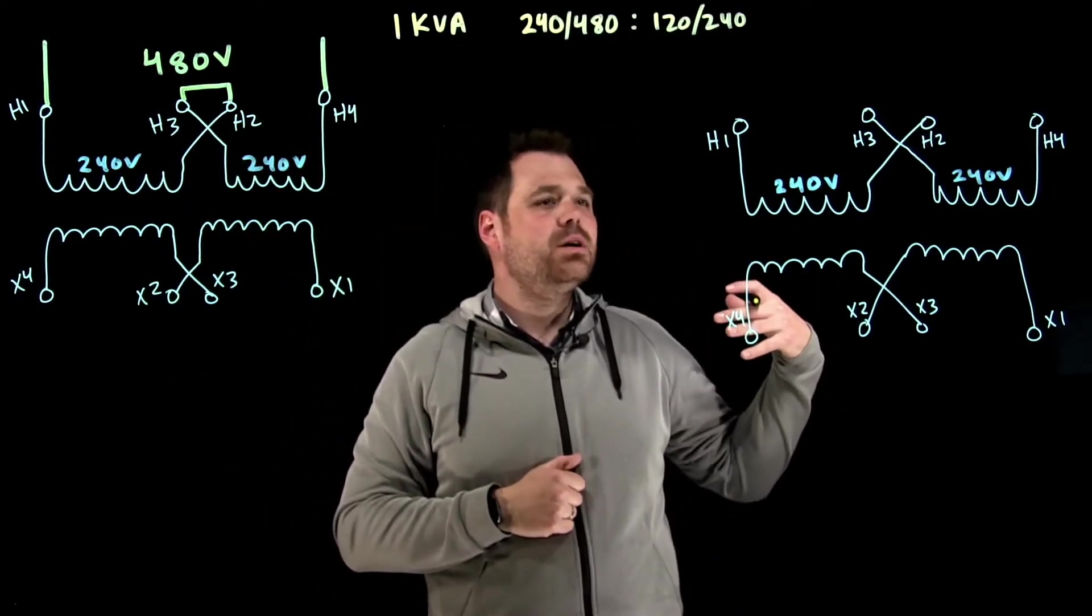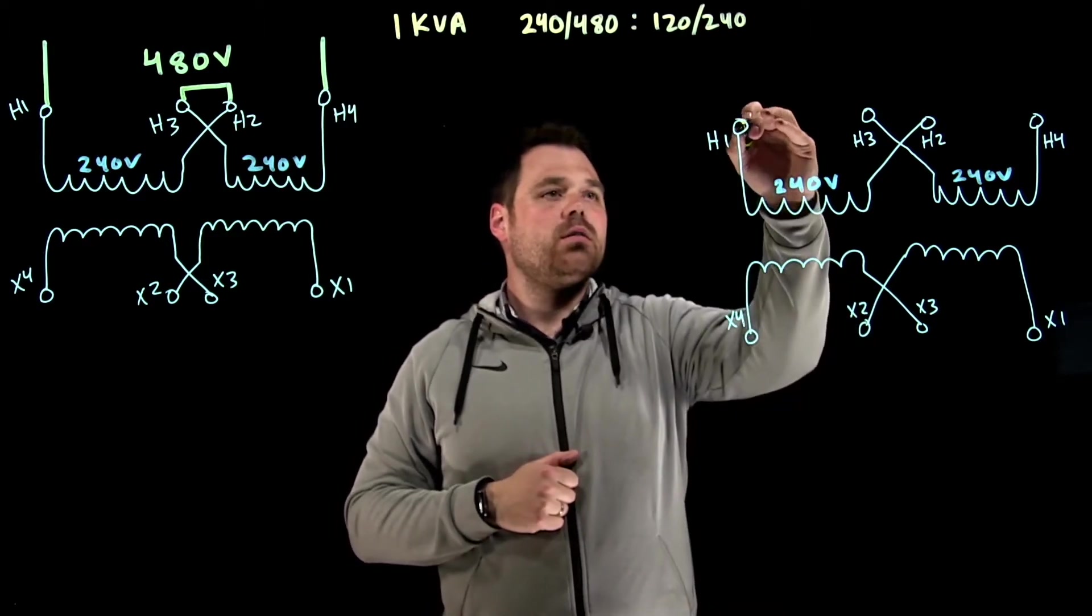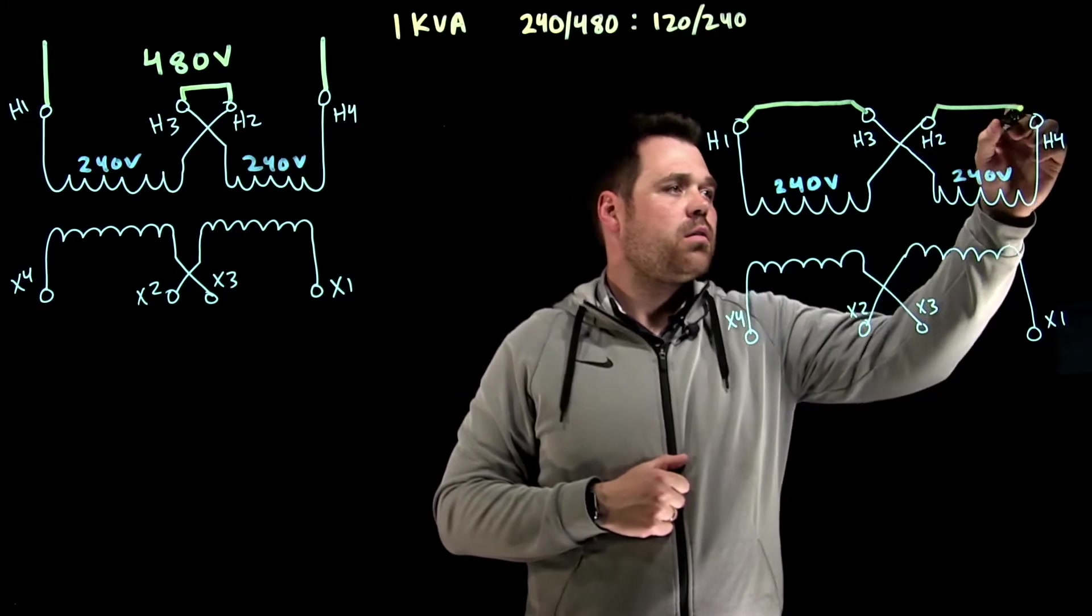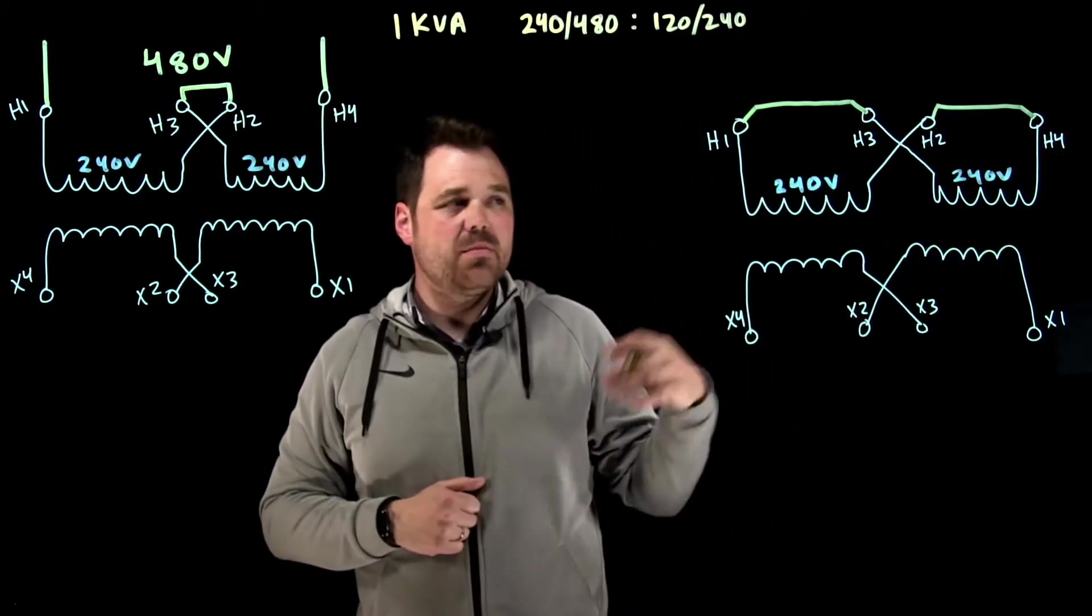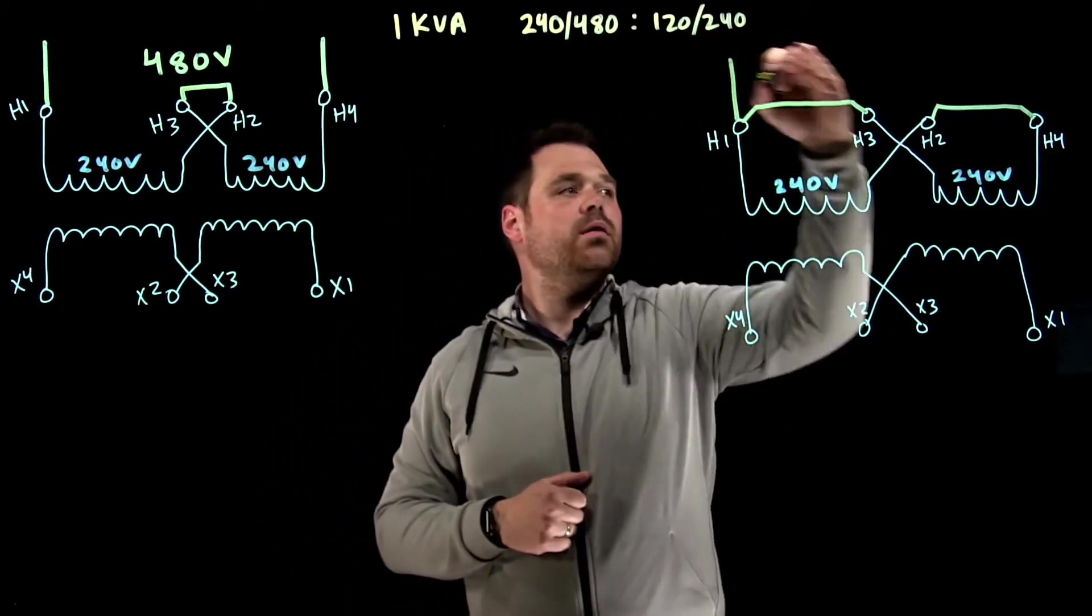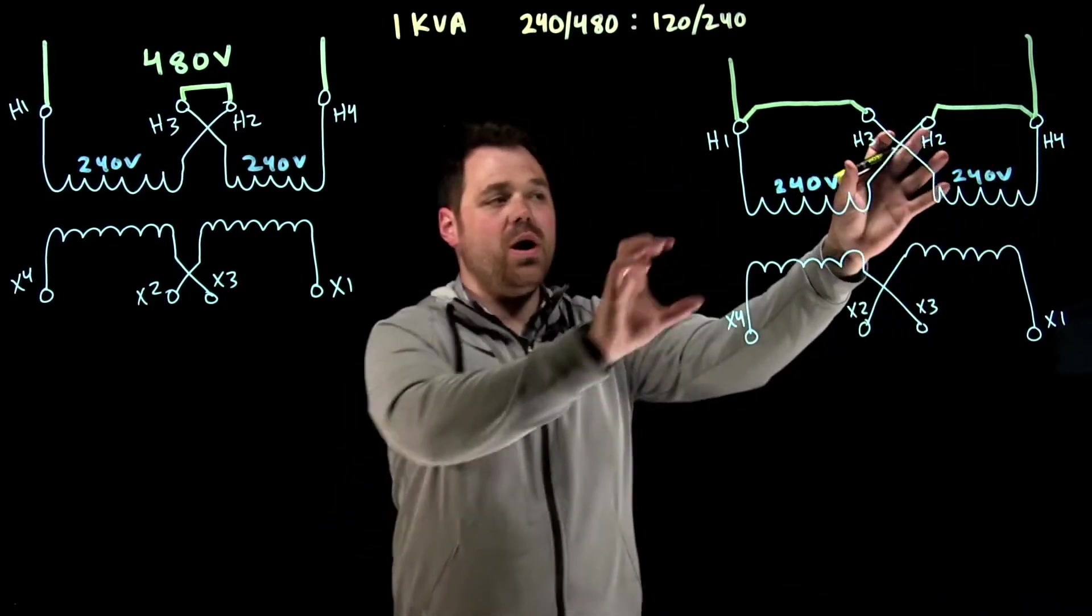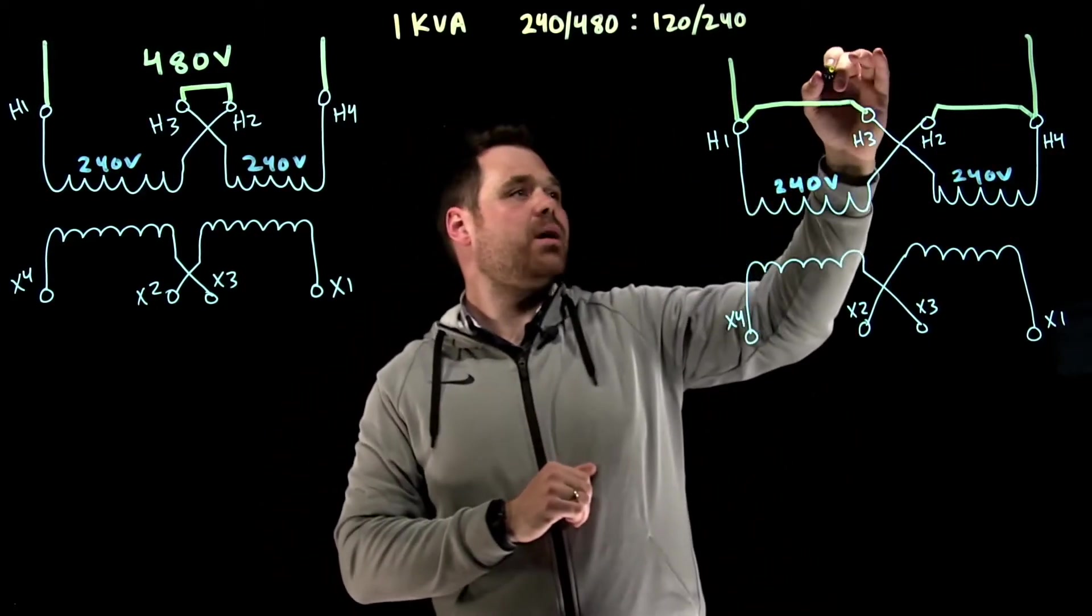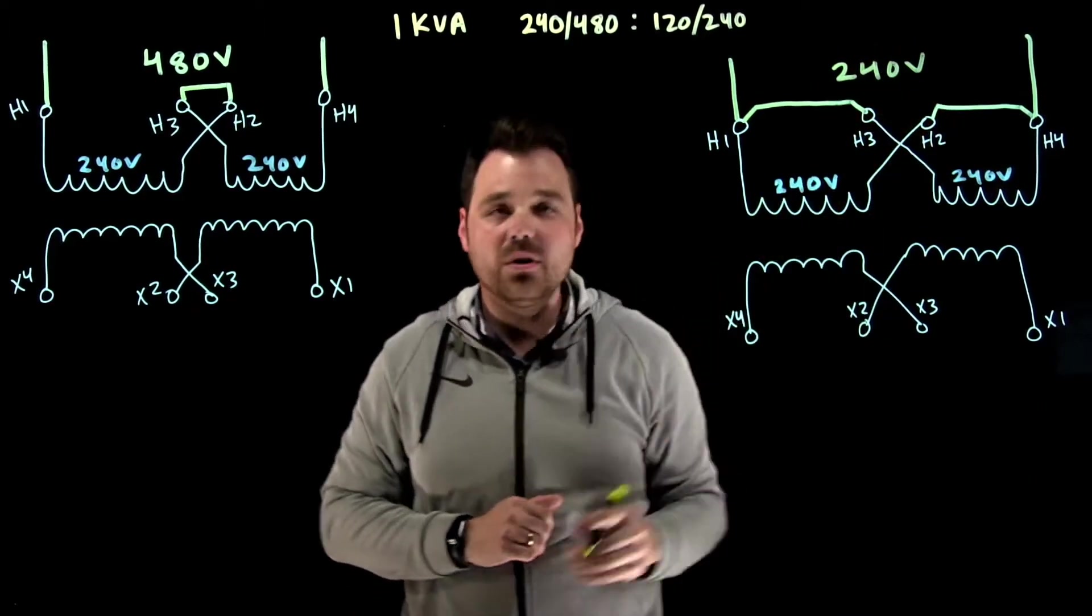What if I connect them in parallel? I put my evens in parallel, my odds in parallel. Now, those two windings have essentially been connected in parallel with one another, meaning it would only be good for 240 volts,